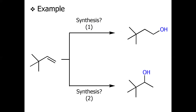Consider another example with a highly substituted alkene bearing a tertiary butyl-like group. We need to synthesize two different alcohol products from this alkene. Looking at the structure: one alcohol has OH at the CH carbon following Markovnikov's regioselectivity, while the other has OH at the CH2 carbon following anti-Markovnikov regioselectivity. For anti-Markovnikov, we use hydroboration-oxidation; for Markovnikov, we can use oxymercuration-demercuration or acid-catalyzed hydration.